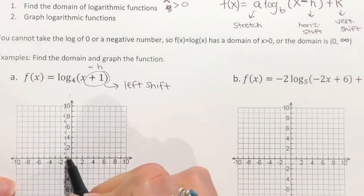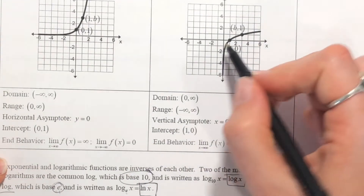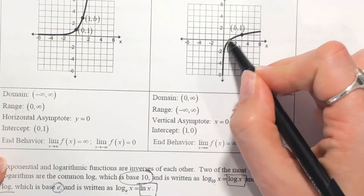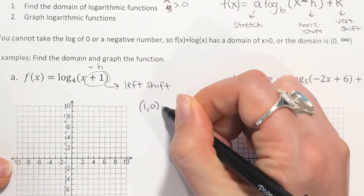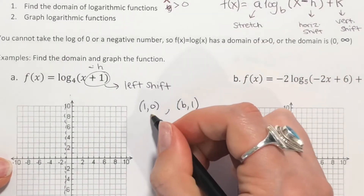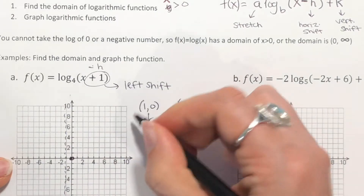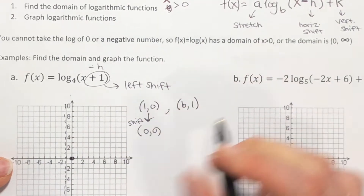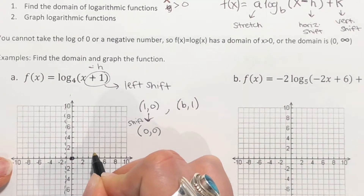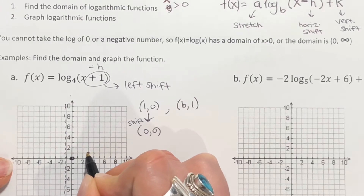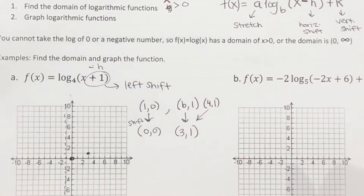The domain has changed — we're now starting at negative one. We can use two key points to help graph by hand: normally there's a point at (1, 0) and a point at (b, 1). But we've shifted left one, so (1, 0) becomes (0, 0). Our base is four, so what was (4, 1) shifts left one to become (3, 1).